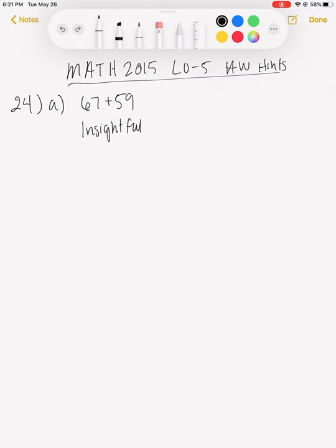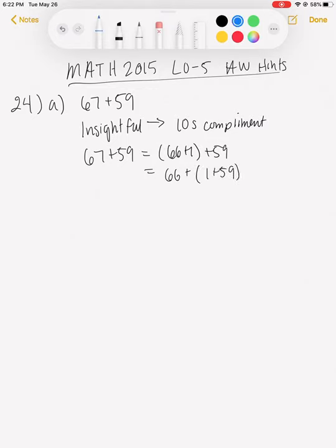We'll start with the insightful way. Insightful ways can be looking for tens complements or making tens, making hundreds. So we're going to do the tens complement where we take from the 67 and give to the 59. So 67 plus 59 equals 66 plus 1 plus 59. We're going to switch the association here because of the associative property, giving us 66 plus 60, which gives you 126.